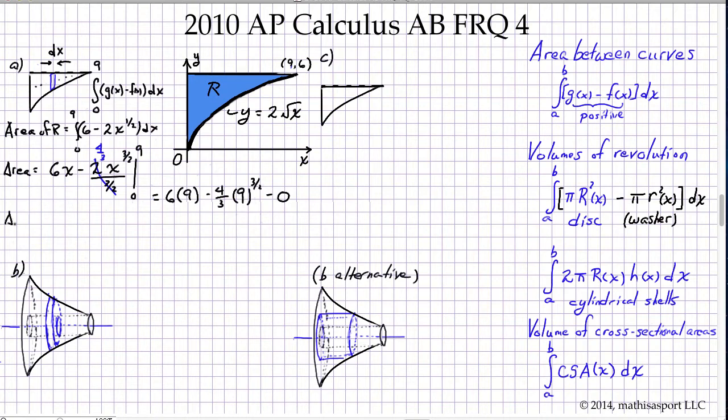So the area equals 54 minus, now let's think about this, 9 to the 3 halves. First work with the denominator: square root of 9 is 3, then we cube it, 27. 27 divided by 3 is 9. 4 times 9 is 36. Our area is 54 minus 36, which equals 18.